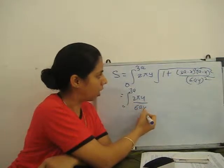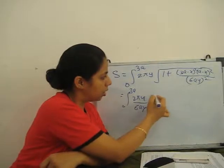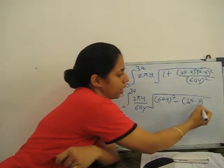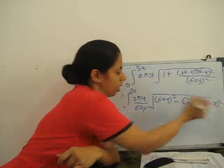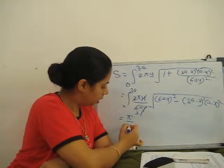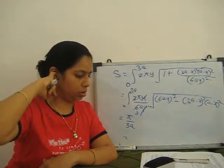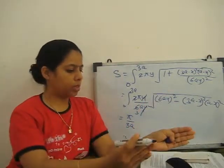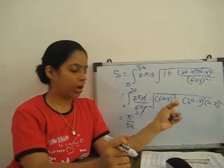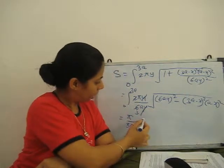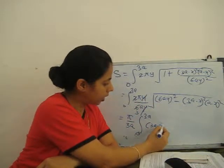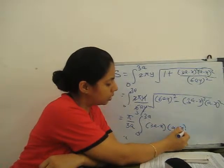We are taking outside 6ay. We have 6ay² minus 3a minus x² into (a minus x)². Now y cancels with y to give 3z. So outside is π/(3a). When you simplify and open it, you will get (3a - x)(a + x). So when we take outside, with limits 0 to 3a, it gives the integral of (3a - x)(a + x) dx.